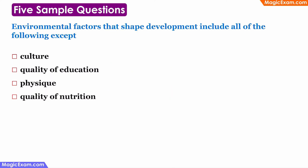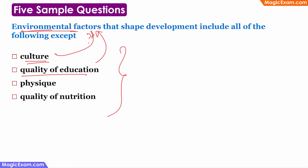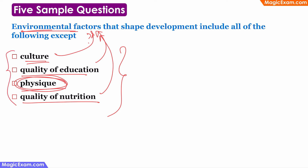Environmental factors that shape development include all of the following except which? Environmental factors are those that affect development apart from hereditary factors. Culture in which the child is brought up is an environmental factor. Quality of education is also an environmental factor. Quality of nutrition — the type of food the child is getting — is also an environmental factor. However, physique — whether the child is tall or short — is not itself an environmental factor; it can result from both hereditary and environmental factors but is not one itself. Therefore, the correct answer is physique.